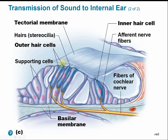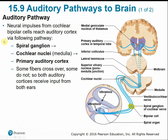Zooming in on the inner ear hair cells: when the fluid receives pressure waves from the sound waves on the eardrum and auditory ossicles, the fluid moves and bends these hairs. When triggered, the hairs send impulses to the cochlear nerve. The neural impulses travel through the spiral ganglia of the cochlear nerve, then to the cochlear nuclei of the medulla, and are processed through the thalamus before being rerouted to the primary auditory cortex in the temporal lobe.